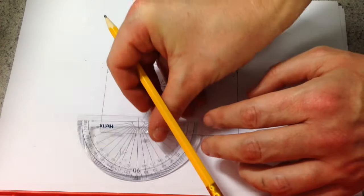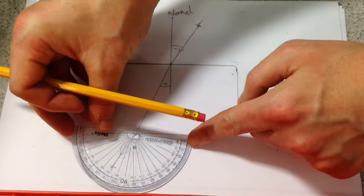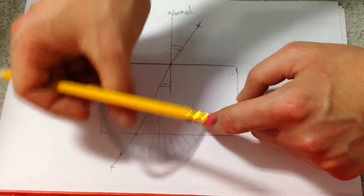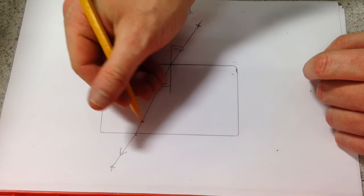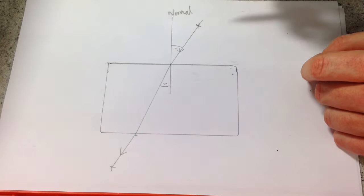The other thing you could do is mark a second normal line at this point. And you can measure your angle of incidence and angle of refraction on this side as well.